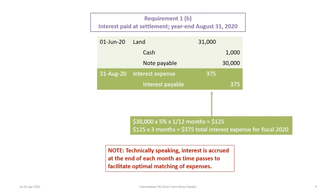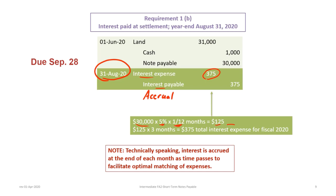Recall that the note is due September 28th, but we have an intervening year-end at August 31st. We must accrue the interest that has been accumulating since the purchase. This accrual entry debits interest expense and credits interest payable for $375, calculated as $30,000 times 5% times 3/12 months ($125 per month × 3 months). Technically, interest is accrued monthly to best match expenses, but for educational purposes we do one large accrual for the full amount at year-end.